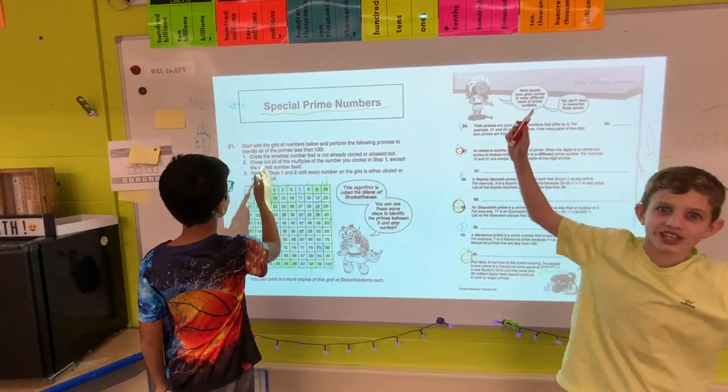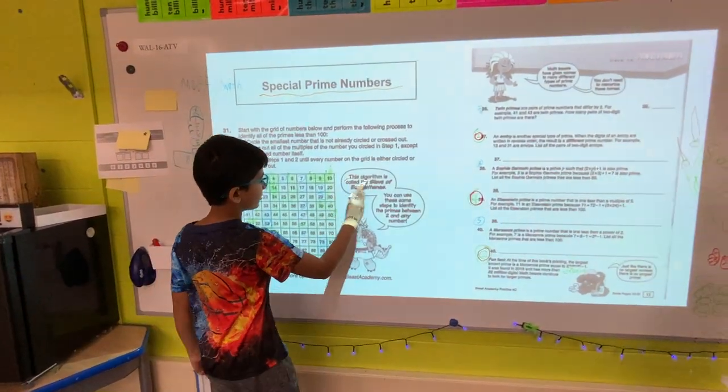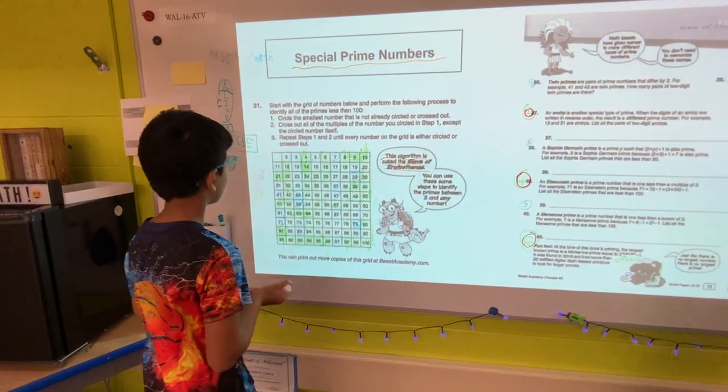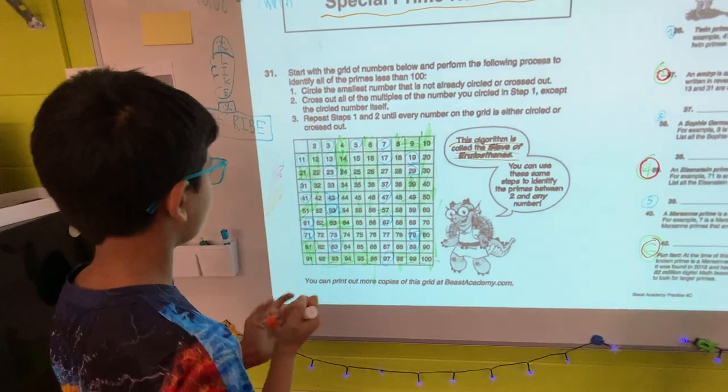First, we are going to show you this algorithm called the Sieve of Eratosthenes. It will help you identify the primes between two and a hundred.